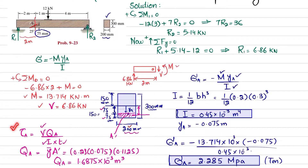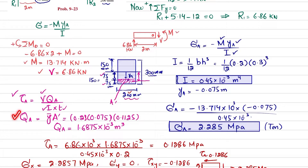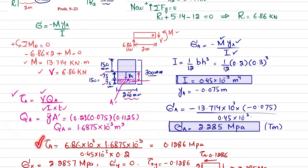Next, we find the shear stress using the formula involving V, I, and thickness t. We need Q_A, which is found using Q = Y-bar times A, where A is 200 multiplied by 75 — that is 0.2 meters by 0.075 meters — and Y-bar is the distance from the neutral axis to the mid of that section, which is 0.1125 meters. Substituting all values gives a shear stress of 0.1286 megapascal.